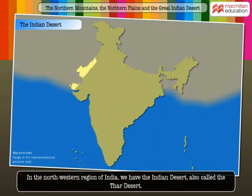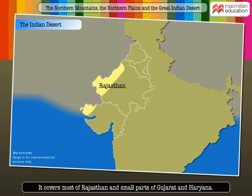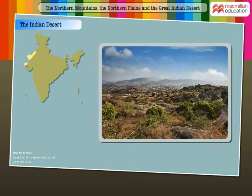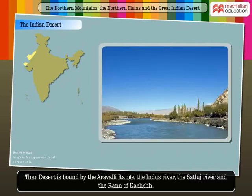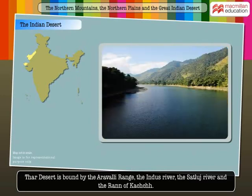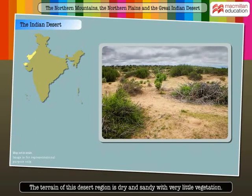Moving to the north-western region of India, we have the Indian Desert, also called the Thar Desert. It covers most of Rajasthan and small parts of Gujarat and Haryana. It is bound by the Aravalli Range, the Indus River, the Sutlej River and the Rann of Kutch. The terrain of this region is dry and sandy with very little vegetation.